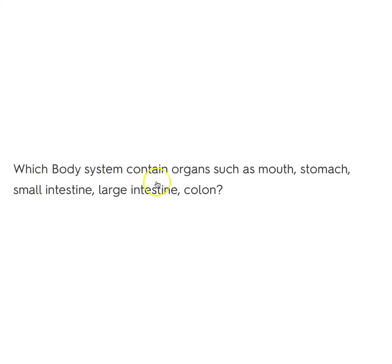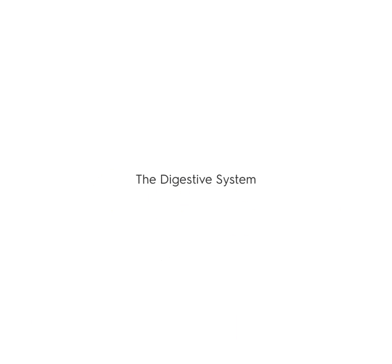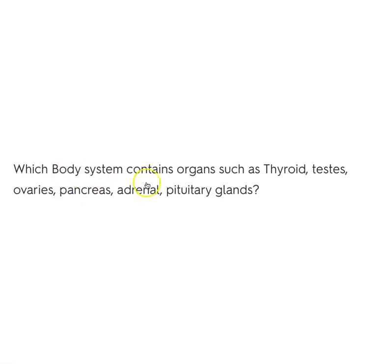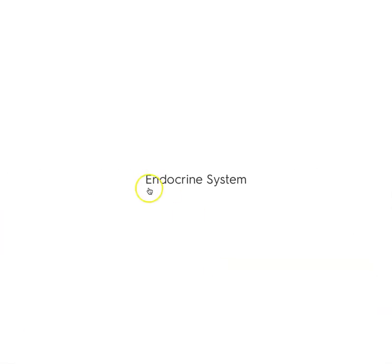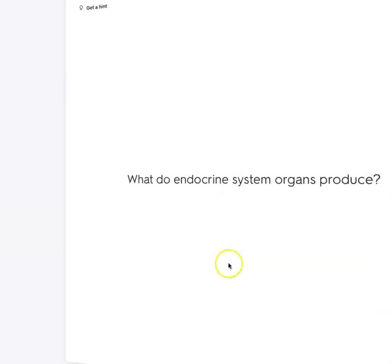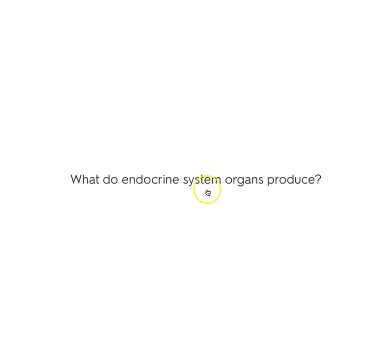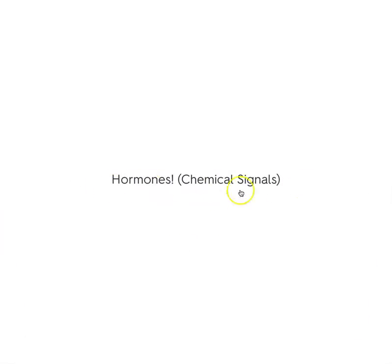When does photosynthesis happen? When light is available. Where in the plant cell? In the chloroplast. Which body system contains organs like the mouth, stomach, small intestine, large intestine, and colon? The digestive system. Which body system contains organs such as the thyroid, testes, ovaries, pancreas, adrenal glands, and pituitary gland? The endocrine system. What do endocrine system organs produce? Hormones — these are chemical signals.